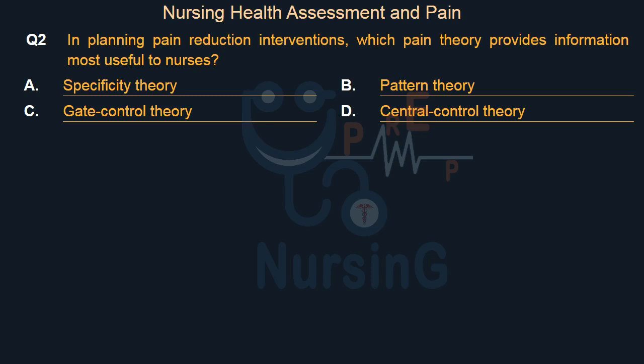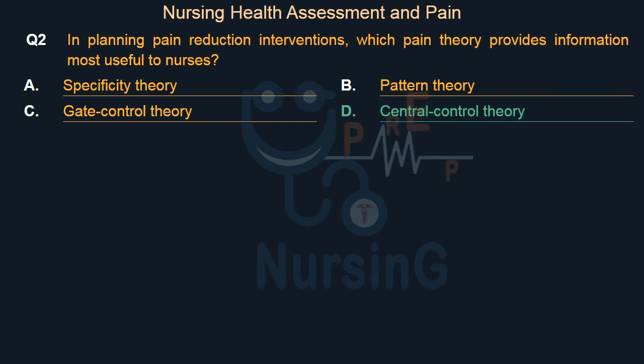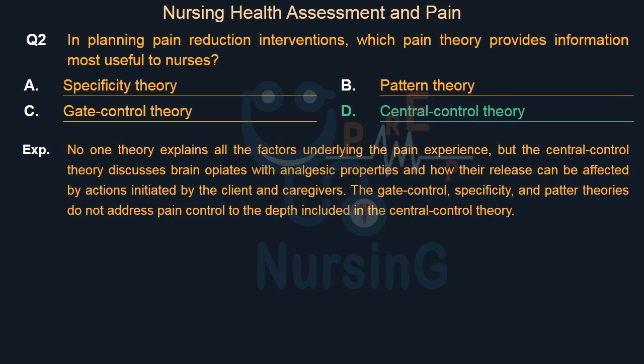The right answer is Option D: Central control theory. No one theory explains all the factors underlying the pain experience, but the central control theory discusses brain opiates with analgesic properties and how their release can be affected by actions initiated by the client and caregivers. The gate control, specificity, and pattern theories do not address pain control to the depth included in the central control theory.